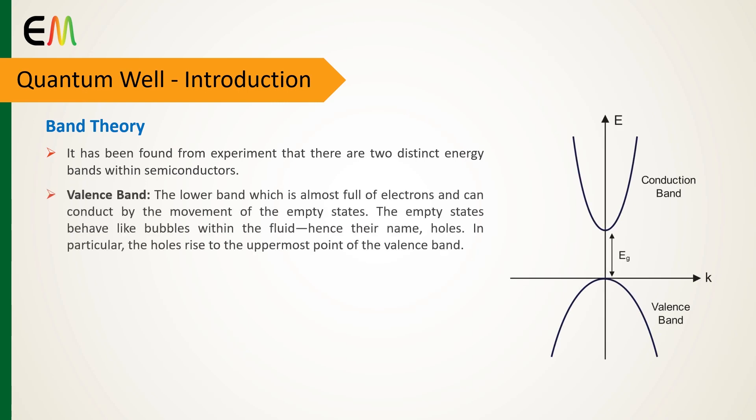The lower band is almost full of electrons and can conduct by the movement of the empty states. This band originates from the valence electron states, which constitute the covalent bonds holding the atoms together in the crystal.